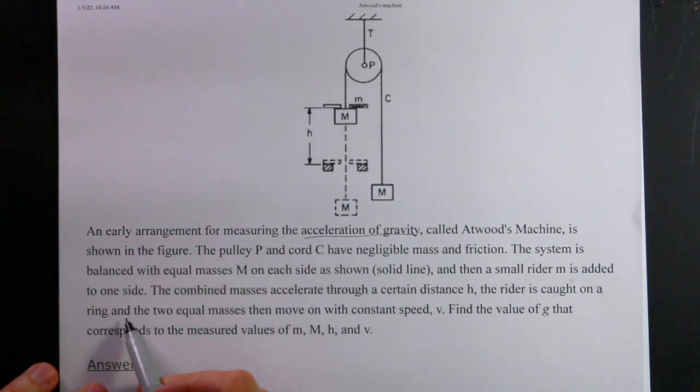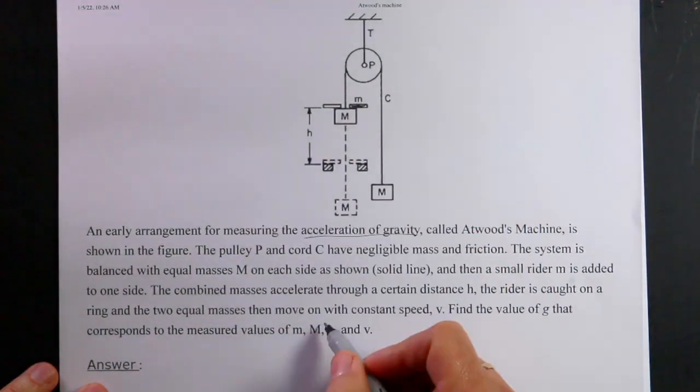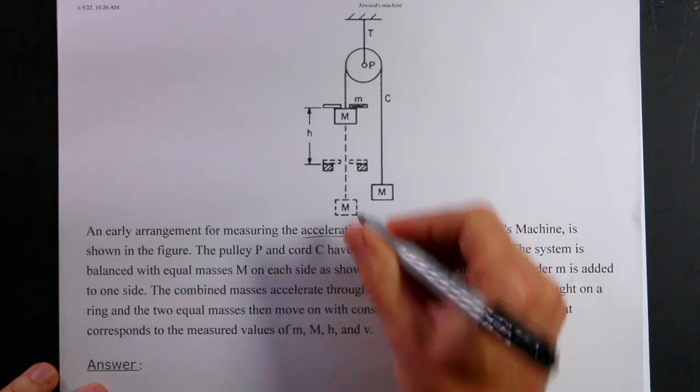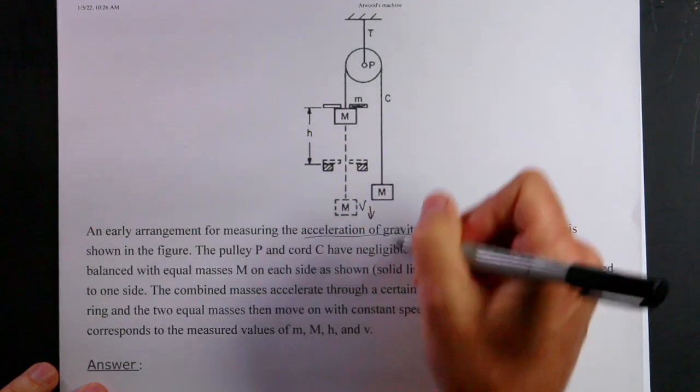And the two equal masses then move with constant speed V. Find the value of G that corresponds to measured values of M, M, H, and V. Okay, so this is V afterwards.